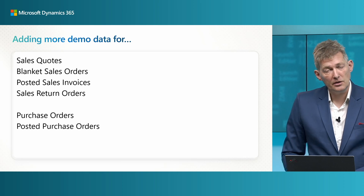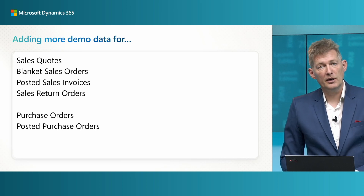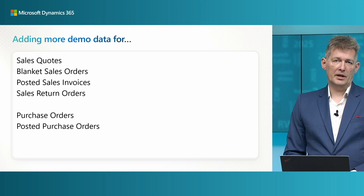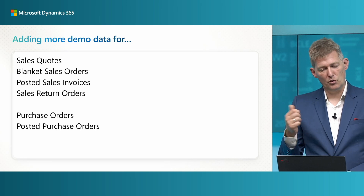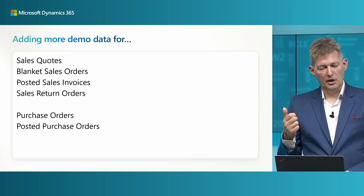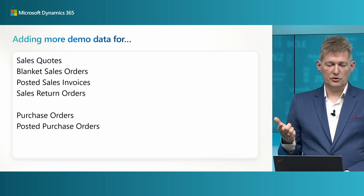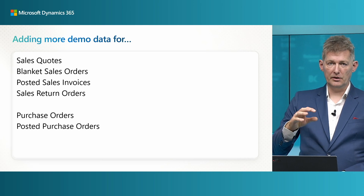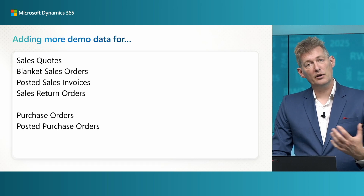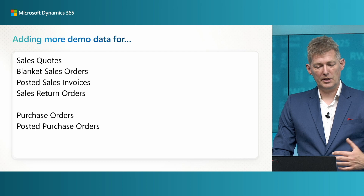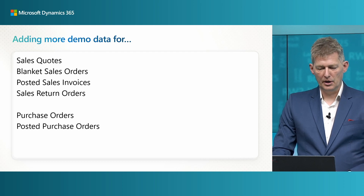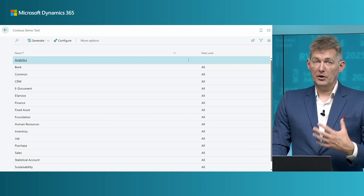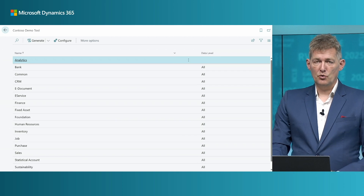What we have done in this Release Wave is adding new demo data for sales and for purchasing. For sales: quotes, blankets, sales orders, posted sales orders, and return orders. For purchasing: purchase orders and posted purchase orders. All of these are available from the Contoso demo tool.